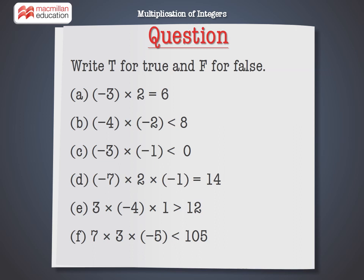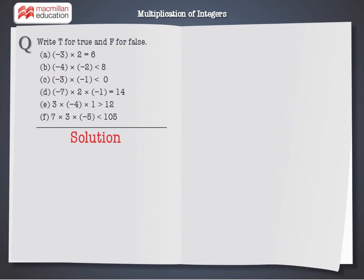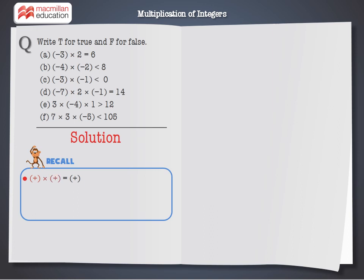F: 7 into 3 into minus 5 is less than 105. We can identify if a statement is true or false by comparing the left-hand side and the right-hand side. This question involves multiplication of integers. Before proceeding, let's recall the basic rules: plus multiplied by plus equals plus, minus multiplied by minus equals plus, plus multiplied by minus equals minus, and minus multiplied by plus equals minus.